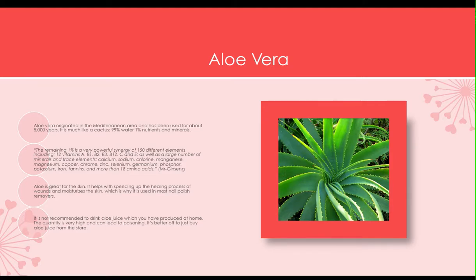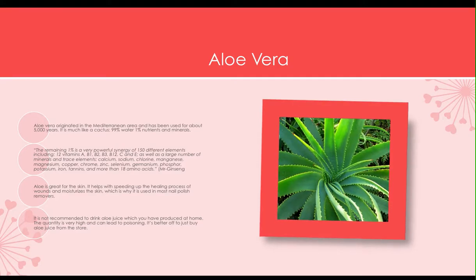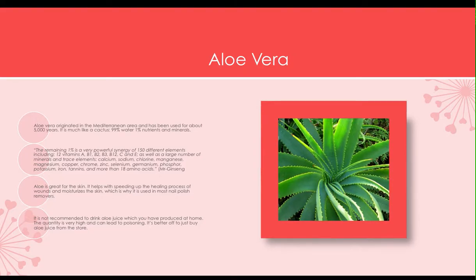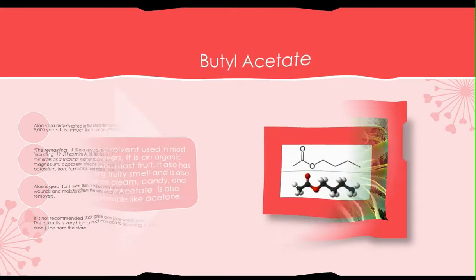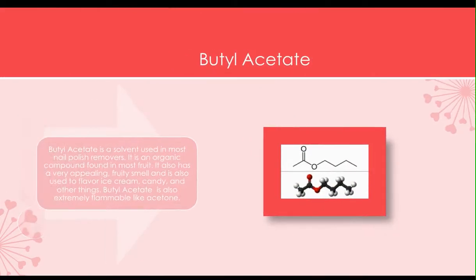Next is butyl acetate. This is an organic compound and it can be found in fruit.